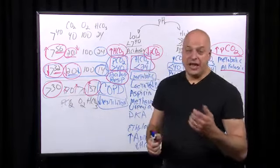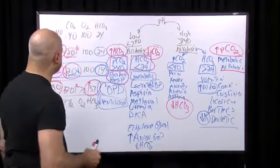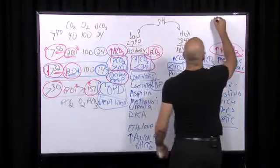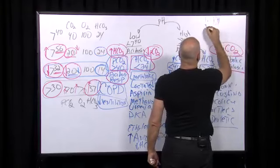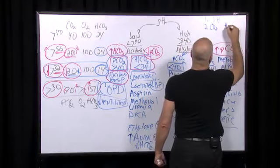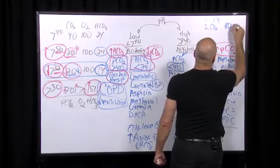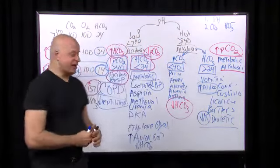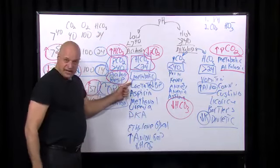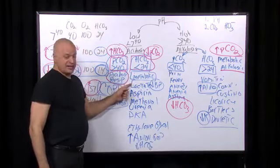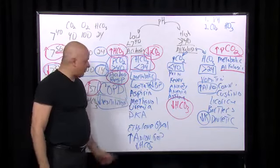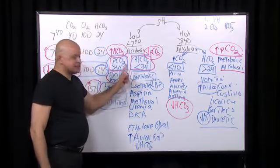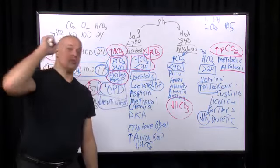Blood gas interpretation takes practice, but the approach is: first, what is the pH? Then, what is the CO2 and what is the bicarbonate — and which one matches the pH disturbance? That identifies the primary problem. Remember: lactate, aspirin, methanol, ethylene glycol, uremia, and DKA all have an increased anion gap metabolic acidosis. You cannot distinguish them based on the blood gas alone.